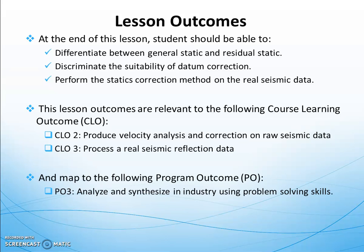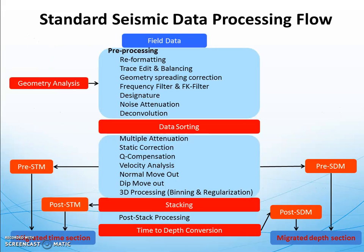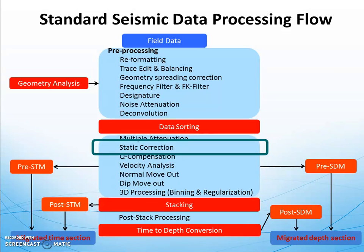Regarding static correction — after you sort the data into the CDP domain, you should be able to apply the static correction also in the shot domain, the offset domain, or other usable domains. It is not exclusively applied in the CDP domain; it can be applied to different domains as well.